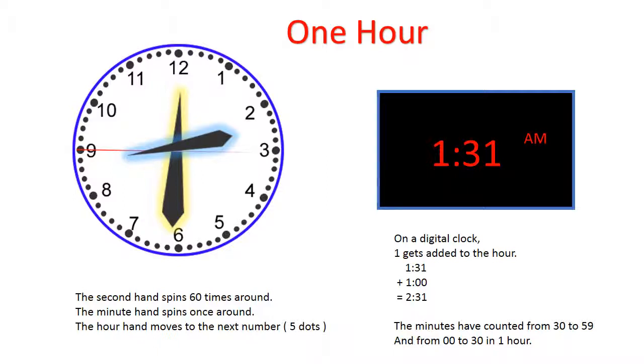One hour, 31 minutes plus one hour equals two hours, 31 minutes. The minutes have counted from 30 to 59 and from 0 to 30 in one hour.